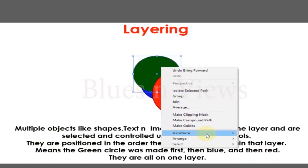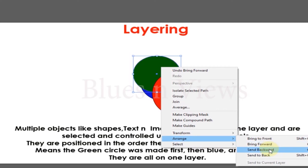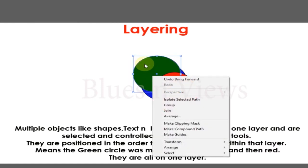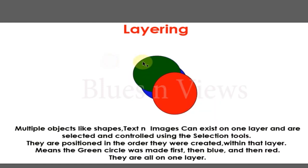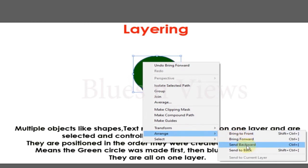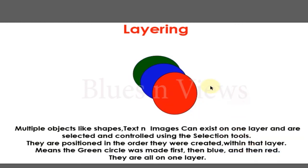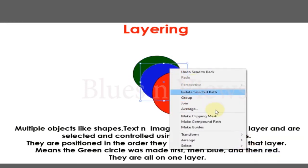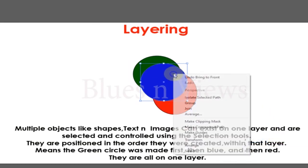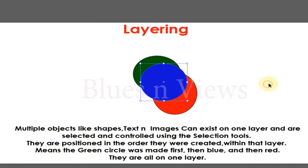Use your cursor to move your selected object forward one step. It is now on top of the blue square, but still behind the red. Do that action again, moving the green square up one more step — it is now at the front. The same action could be done in one step by selecting Bring to Front, which would bring the green square to the front in one go.